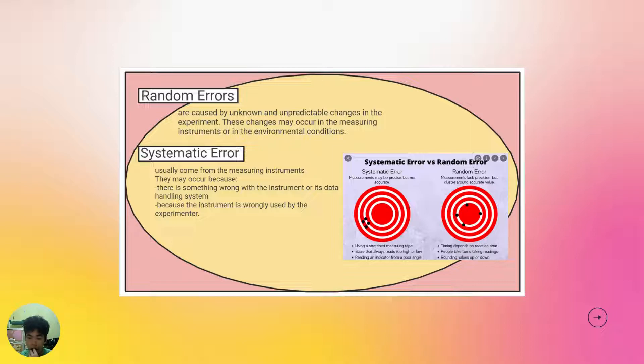Systematic error usually comes from the measuring instruments. This may occur because there is something wrong with the instrument or its data handling system, or because the instrument is wrongly used by the experimenter.